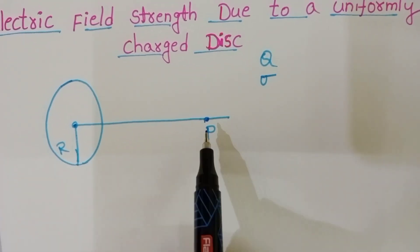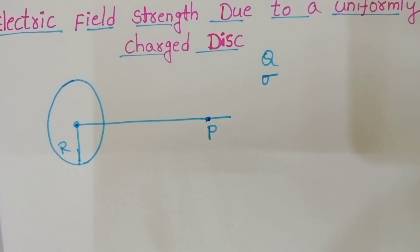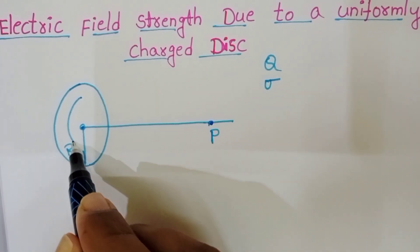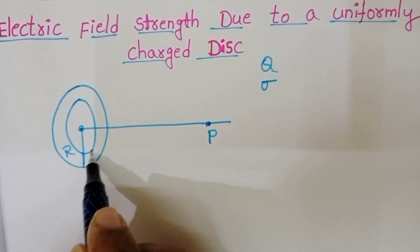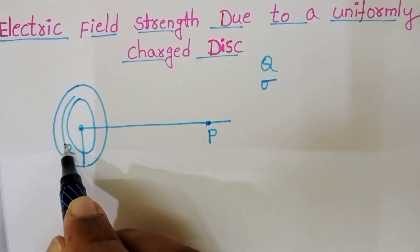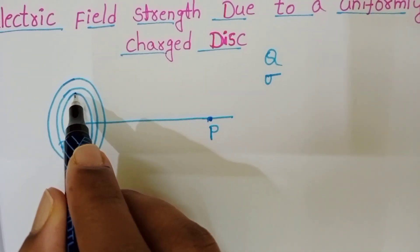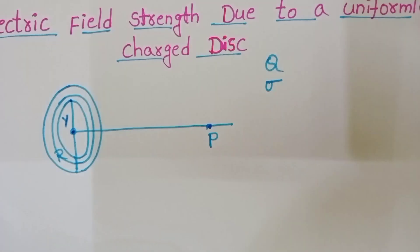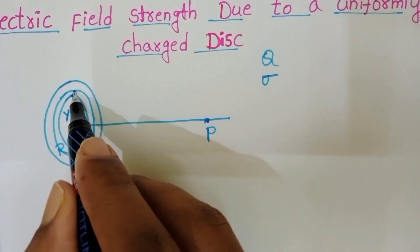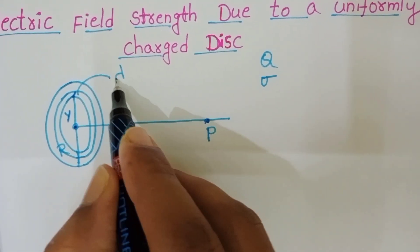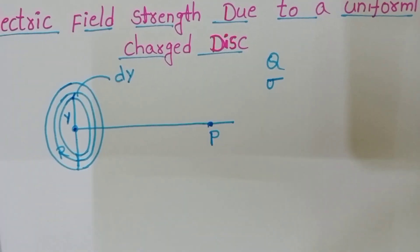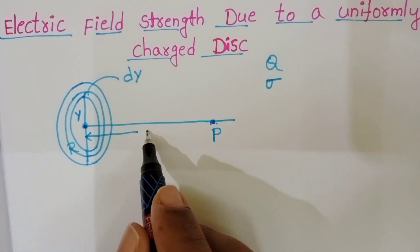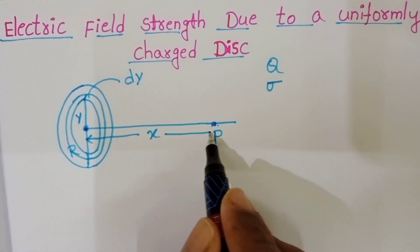So let us find out the electric field strength at the point P on the axis of the charged disc. To find the electric field strength at point P, let us consider an elemental ring on the surface of the charged disc. y is the radius of the elemental ring and dy is the thickness of the elemental ring. Let x be the distance from the center of the disc to the point P.